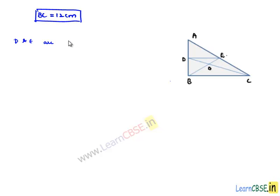Here let us consider that D and E are midpoints of AB and AC as given. So, from the midpoint theorem,